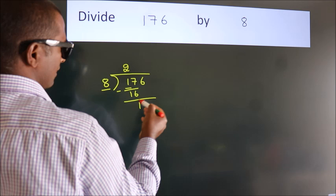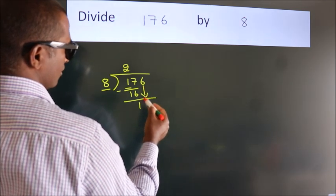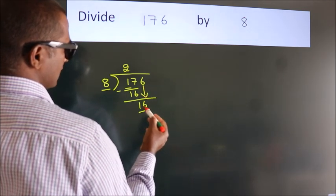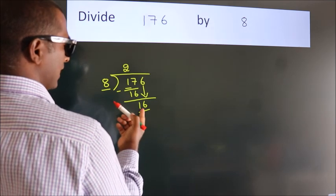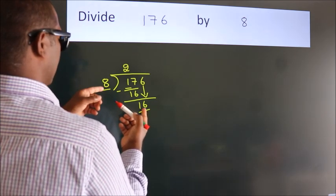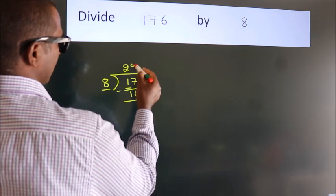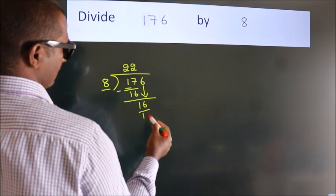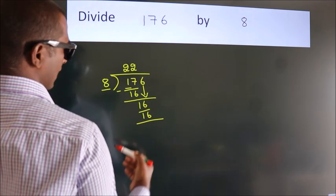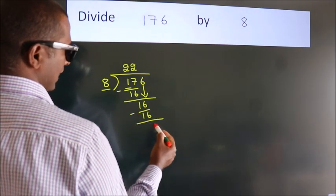After this, bring down the beside number. So 6 down, making 16. When do we get 16 in the 8 table? 8 times 2 equals 16. Now we subtract, and we get 0.